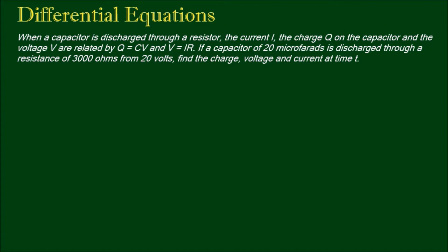So the problem here: when a capacitor is discharged through a resistor, the current I, the charge Q on the capacitor, and the voltage V are related by Q equals CV and V equals IR. If a capacitor of 20 microfarads is discharged through a resistance of 3000 ohms from 20 volts, find the charge, voltage, and current at time t.